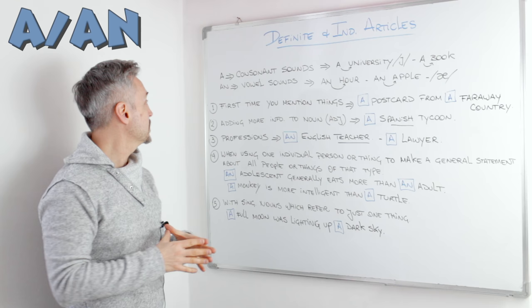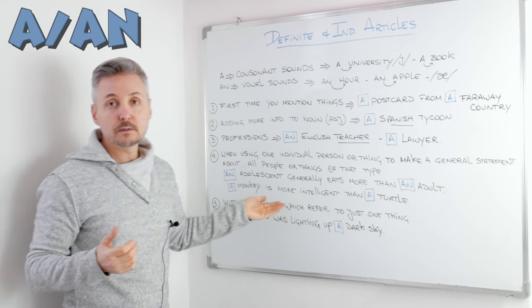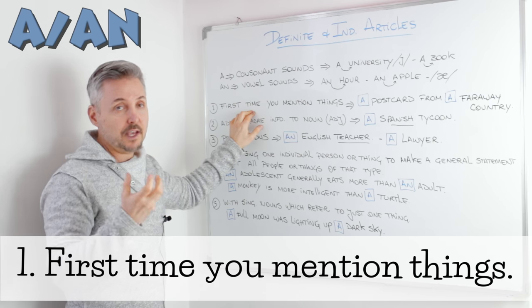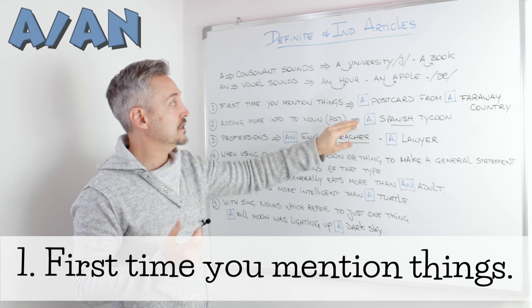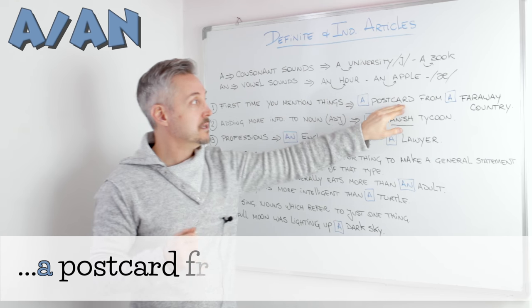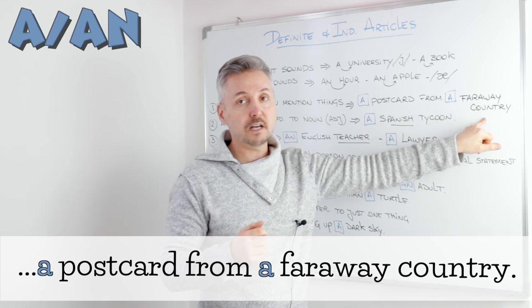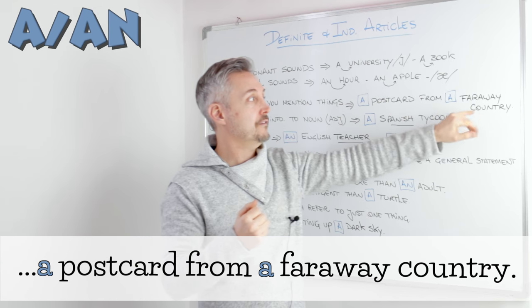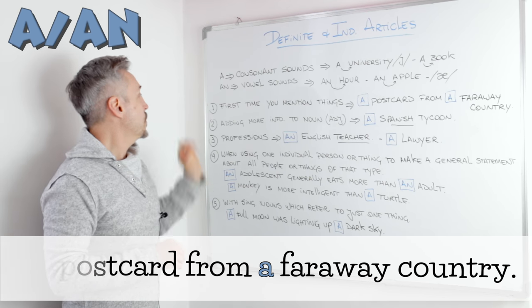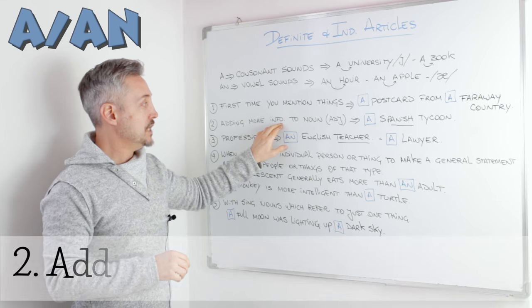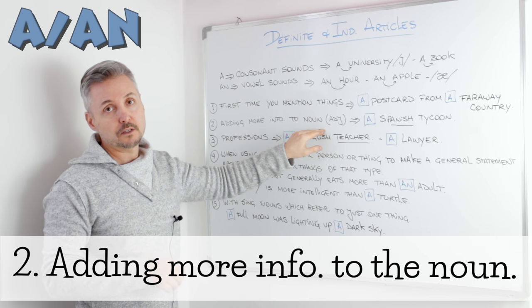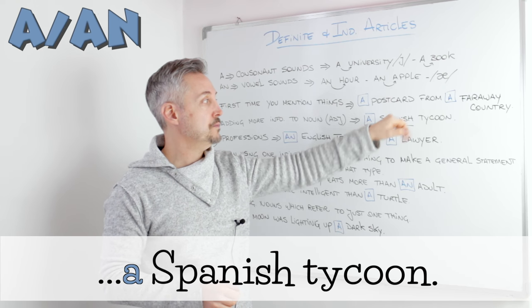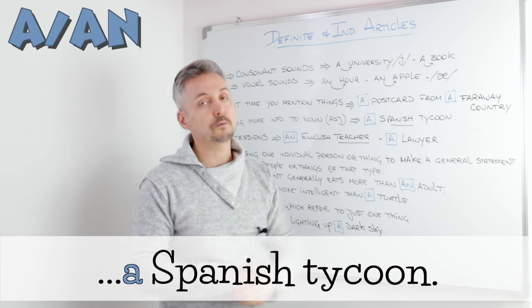I listed five rules to talk about with you. The first: the first time you mention something, you use the indefinite article 'a' or 'an'. 'A postcard from a faraway country' — this is the first time I mention the postcard and the faraway country. The second rule: adding more information to the noun with, for example, an adjective. 'A Spanish tycoon' — 'Spanish' is the adjective, 'tycoon' is the noun.